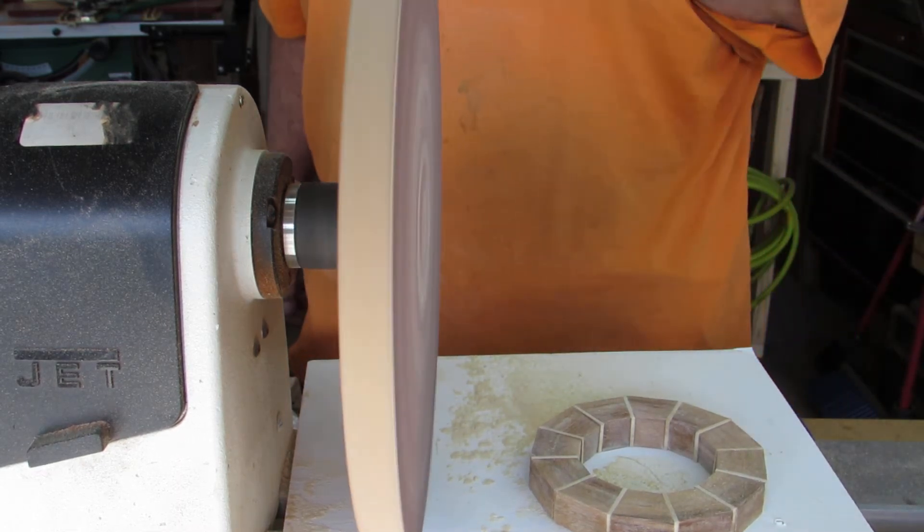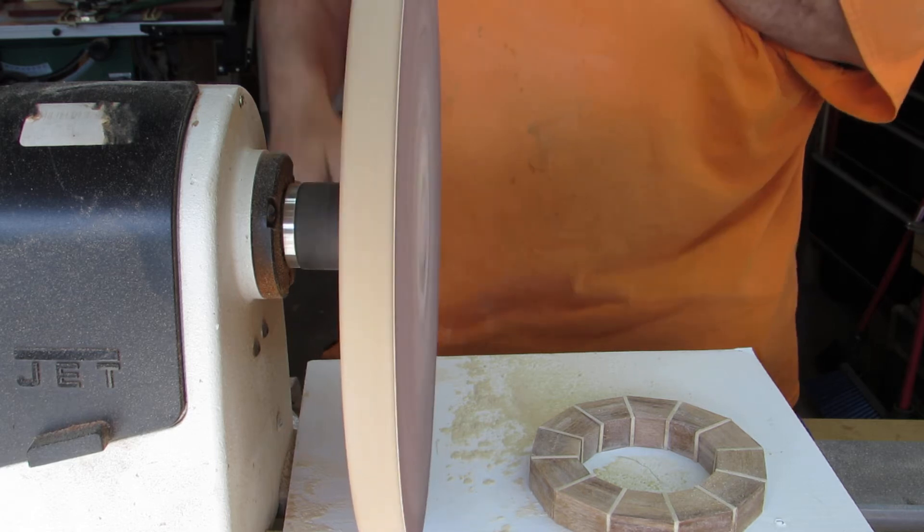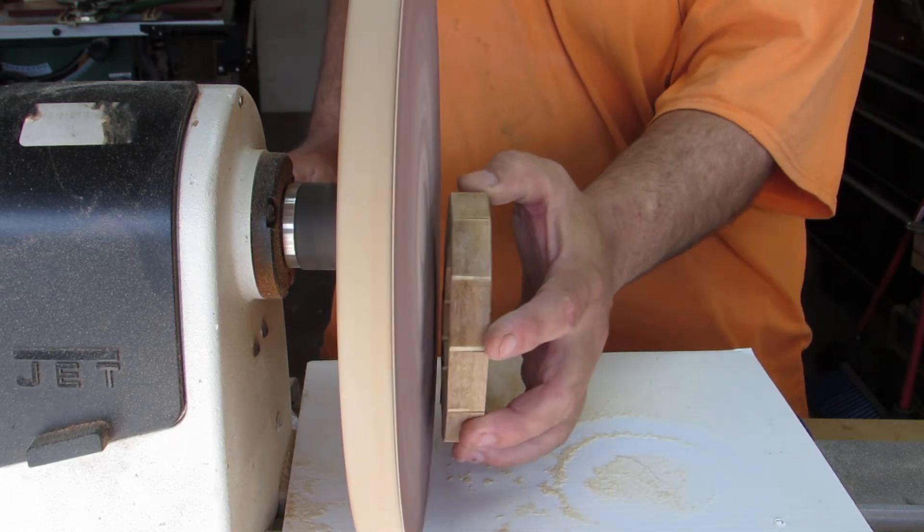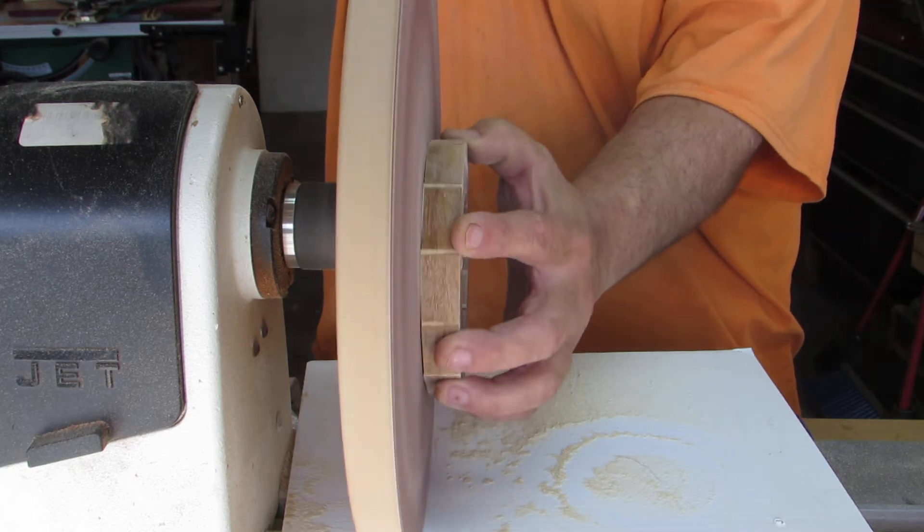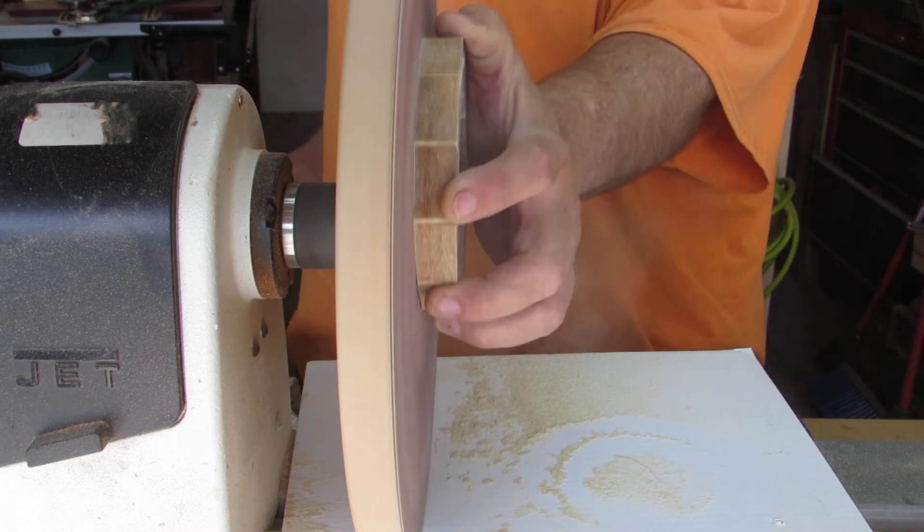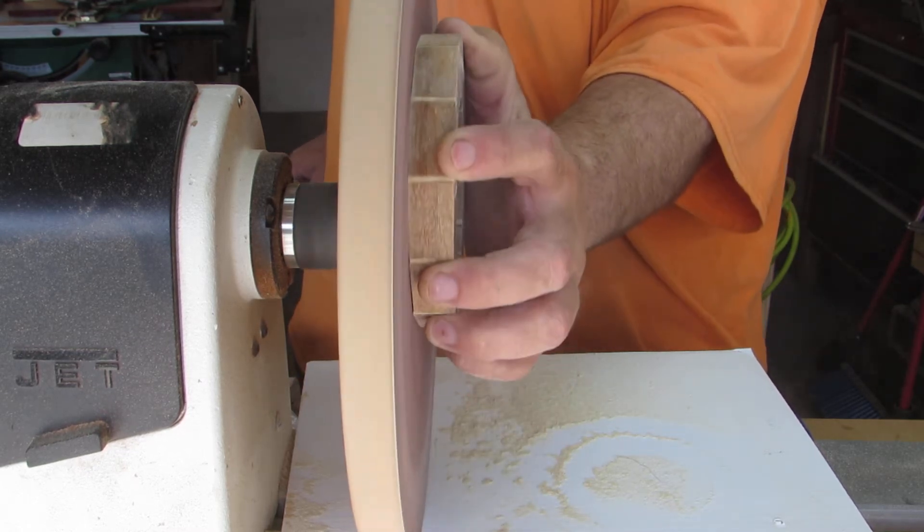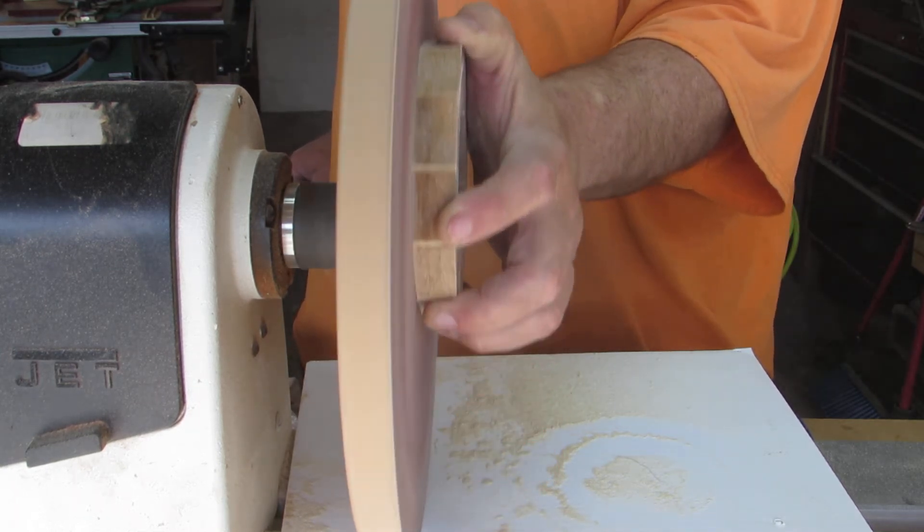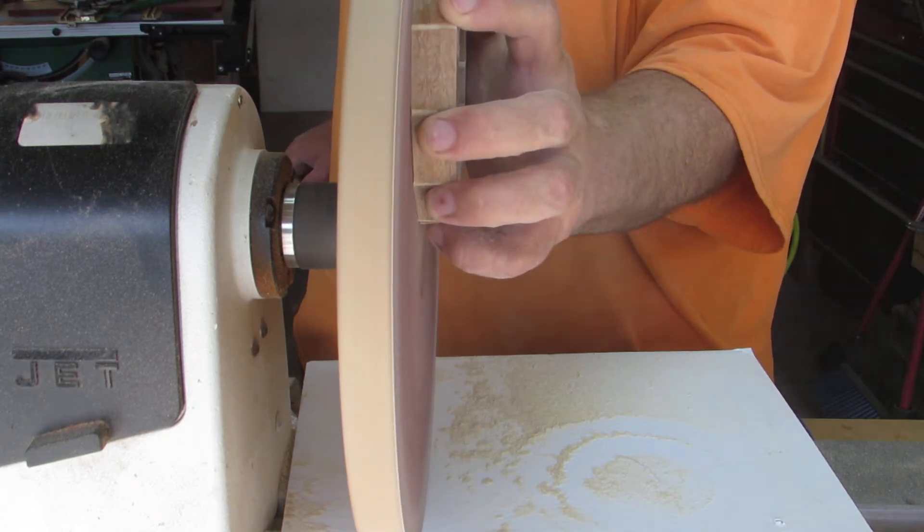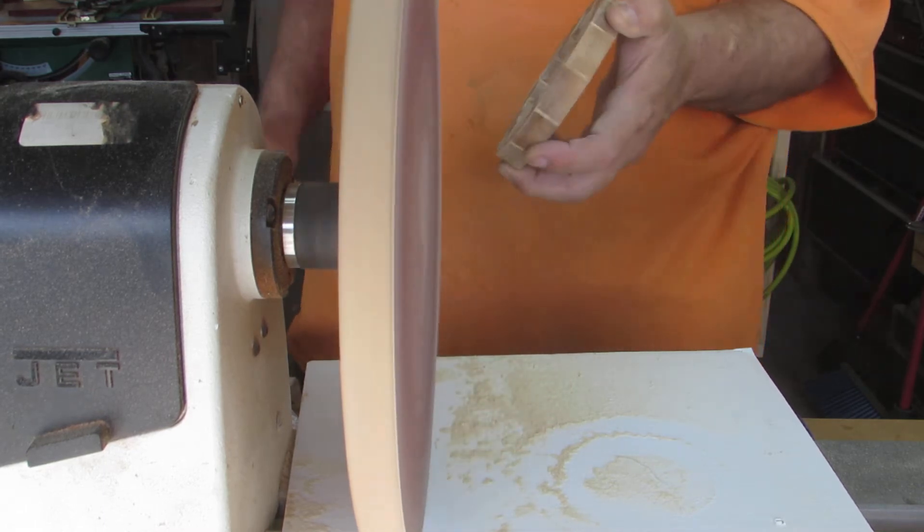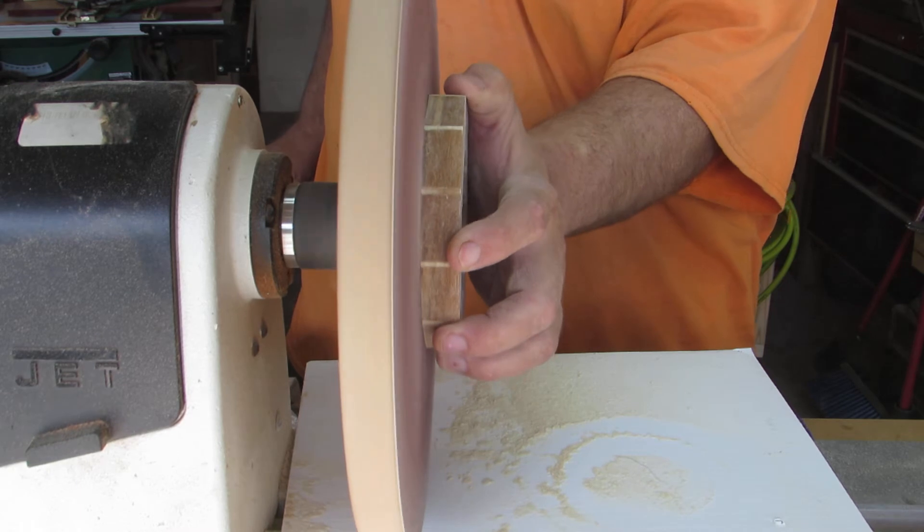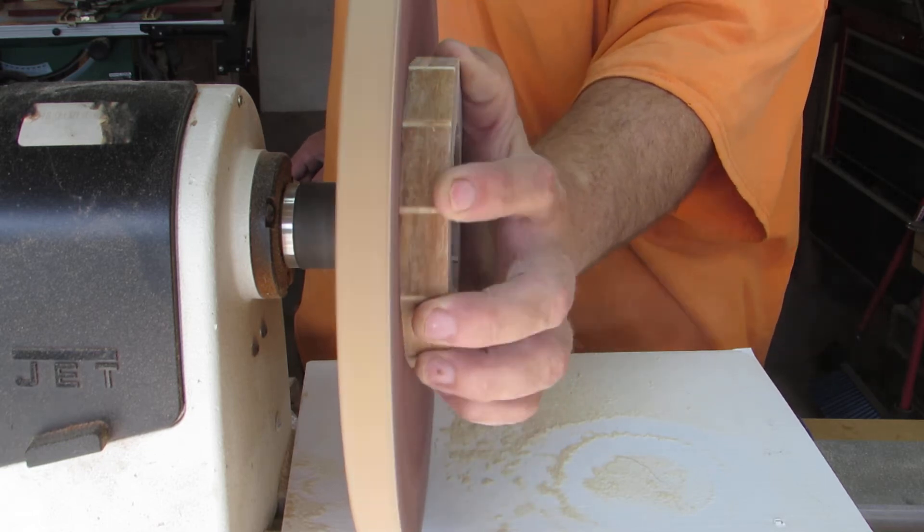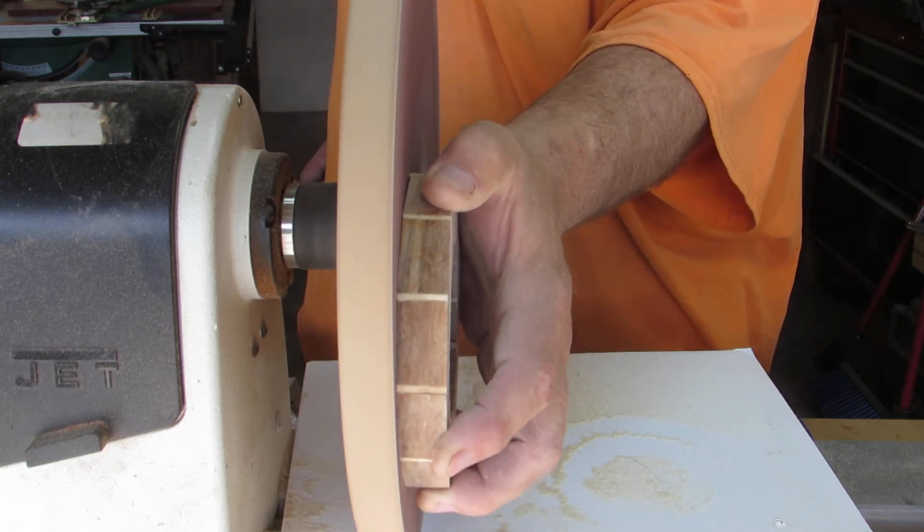I'm going to stand on the back side of the lathe because my lighting is horrible. All we're going to do is hold it there until those gaps disappear. Move it around. I'm working left-handed. You'll just see those gaps, they'll just disappear.